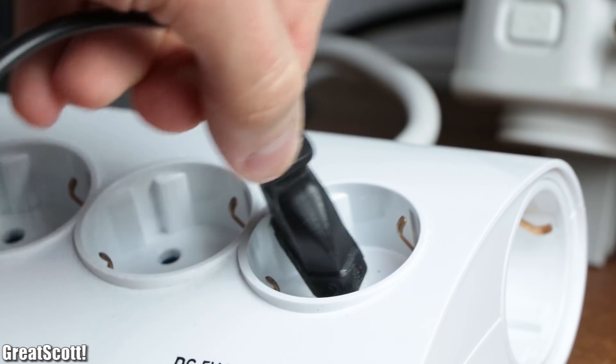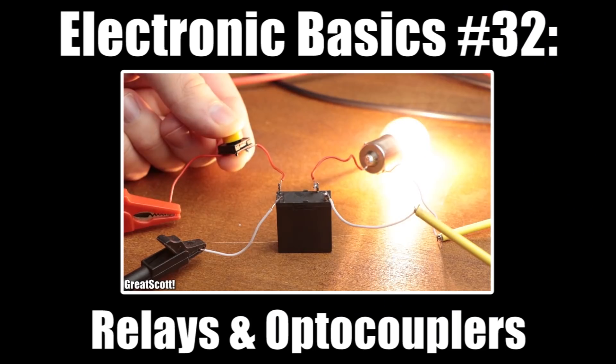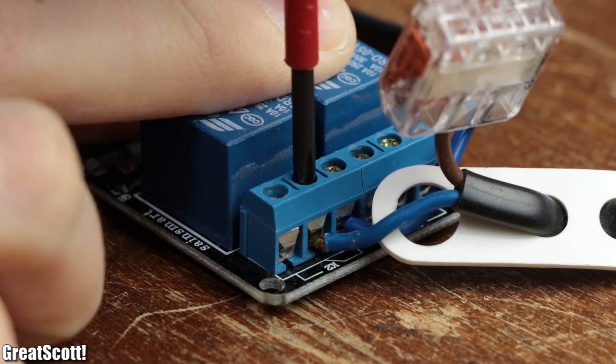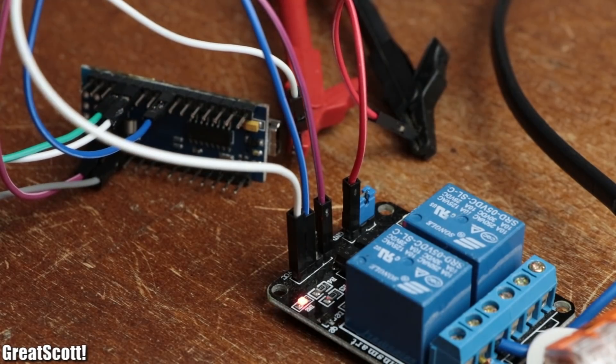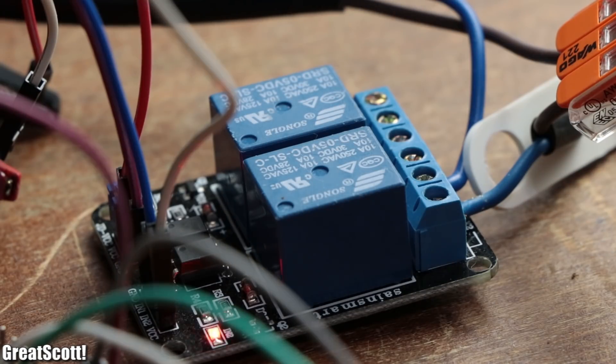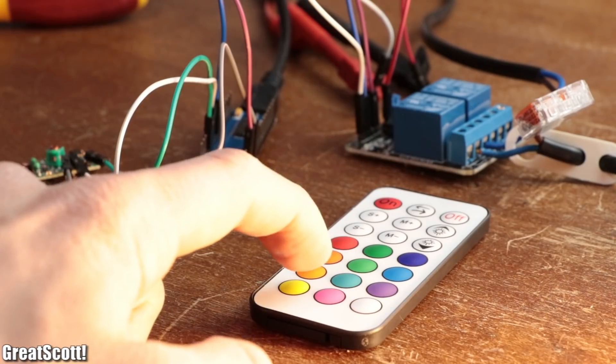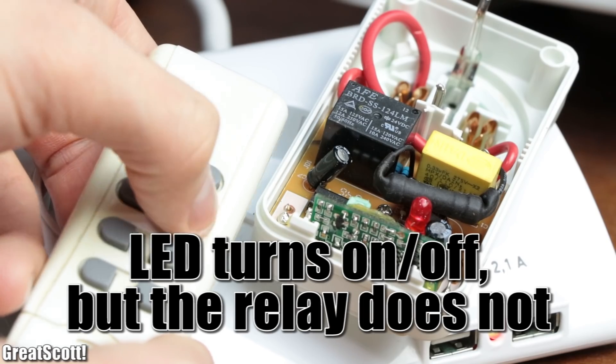But of course in order to control mains voltage we would need something like a relay about which you can learn the basics in one of my previous videos. Anyway after building up a small demonstration circuit with this generic relay board it worked just like I thought it would. But honestly speaking I do not put a lot of trust in those relays because I often experienced that after a few weeks of usage their changeover contacts got locked in one position due to sparking.